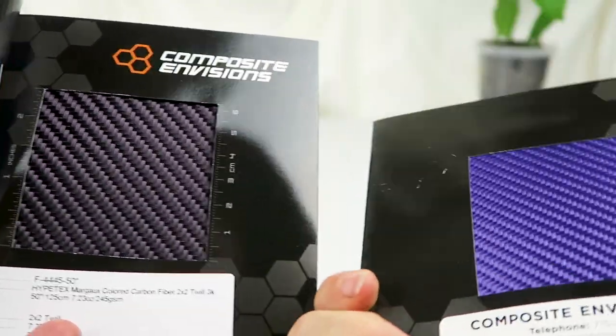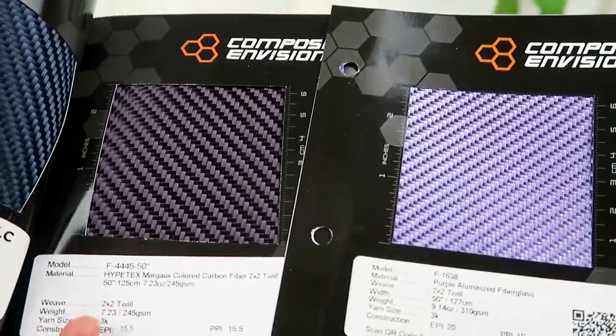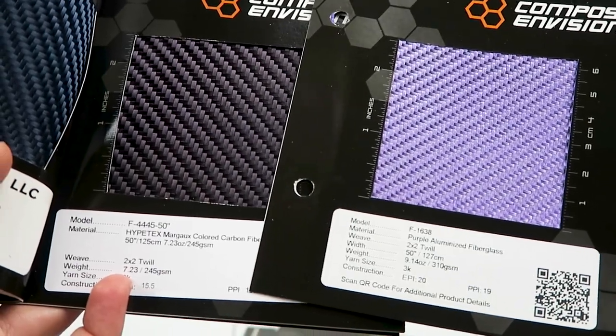A thing to note with the dyed fiberglass is that treatment is only on the front side, whereas these dyed carbon fiber pieces are dyed on both sides. So there is no back or front.